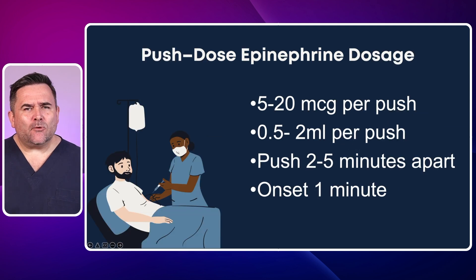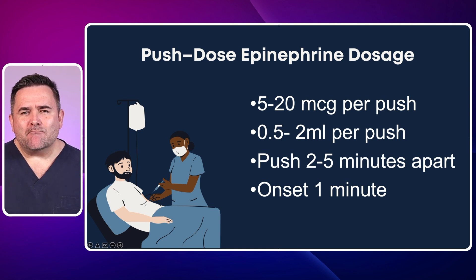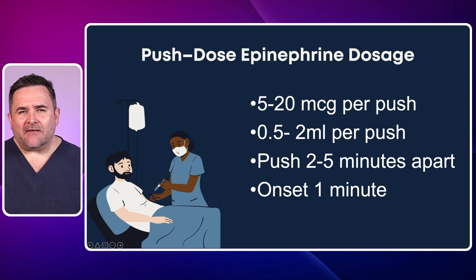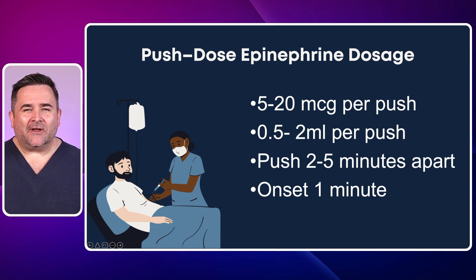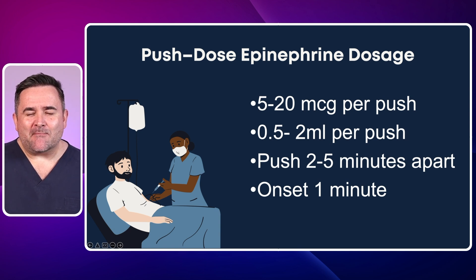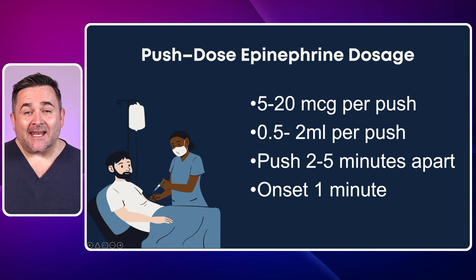So how do we give Push-Dose Epinephrine? Our dose is 5 to 20mcg per push and we can repeat it every 2 to 5 minutes if needed, which is equal to 0.5 to 2ml per push. Expect to see a response in about 1 minute.